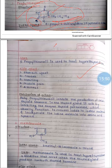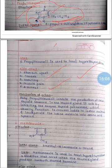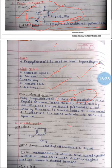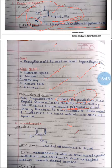Propylthiouracil is used to treat hyperthyroidism. Side effects include stomach upset, nausea, vomiting, muscle pain, and dizziness. Its mechanism of action is that it inhibits the production of new thyroid hormone in the thyroid gland. It acts by inhibiting the enzyme thyroid peroxidase, which normally functions to convert iodide to iodine molecule and incorporate it into the amino acid tyrosine.